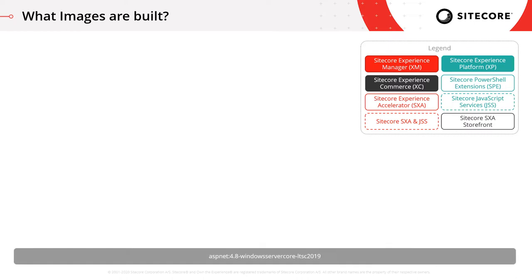We talked a little in the previous video about the concept of layers, and I want to show how those come into play with the different topologies and variants. I'm going to focus here on images built on top of the ASP.NET 4.8 Windows Server Core Long-Term Support 2019 image, which covers a lot of the Sitecore images. There are some based on different base images, like SQL Server and .NET Core images such as some of the XConnect images. We included Experience Management, Experience Platform, and Experience Commerce in our topology parameter.